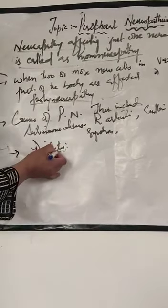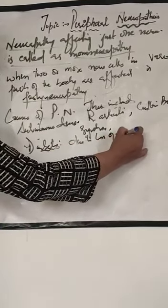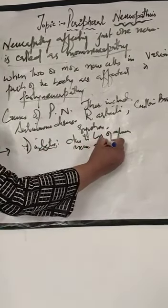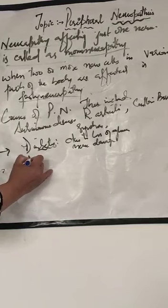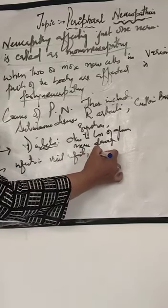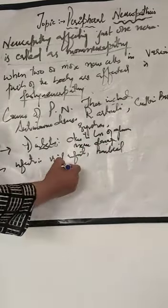The next cause is diabetes — diabetic patients have chances of neuropathy due to impaired glucose uptake by cells. Another cause is infection — viral infections, bacterial infections, diphtheria, leprosy, or HIV infection can all lead to neuropathy.